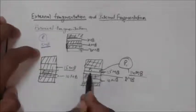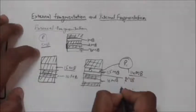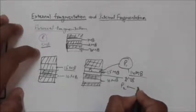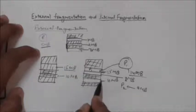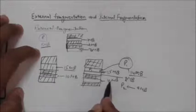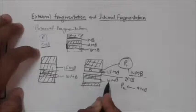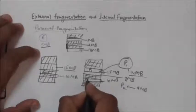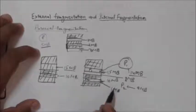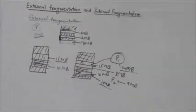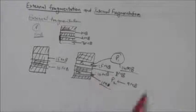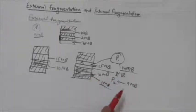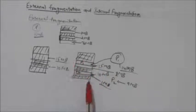Another process P2 arrives requiring 9 MB of memory. The 10 MB hole can satisfy this requirement, so it is broken into two parts: 9 MB given to process P2 and 1 MB remaining as a free hole. As you can see, the free memory is now scattered — there are small free holes in memory, and if combined they could satisfy larger process requirements.